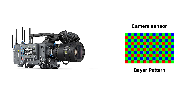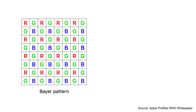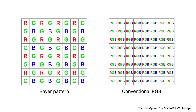The most used color filter arrangement is known as a Bayer pattern, where each 2x2 group of photocytes consists of one red, one blue and two green sensor elements. In contrast, conventional RGB images consist of not one, but three primary color values — red, green and blue — at each pixel location. And that is basically what our displays expect: a red, green and blue value for each pixel.